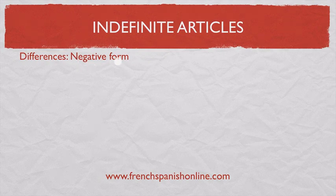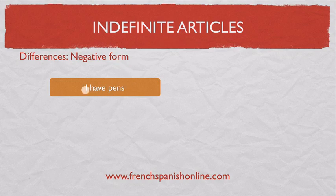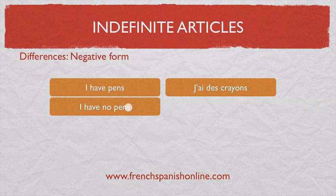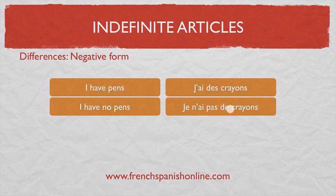Another difference is the negative form. If you want to say 'I have pens', in French you use 'des': 'J'ai des crayons.' However, if you want to say 'I have no pens', you might think you just add negation to get 'Je n'ai pas des crayons' — but that's not correct French. The correct form uses 'pas de': 'Je n'ai pas de crayons.'